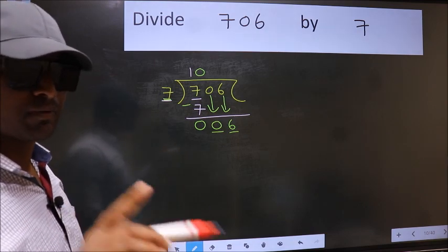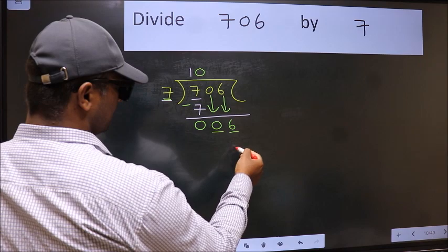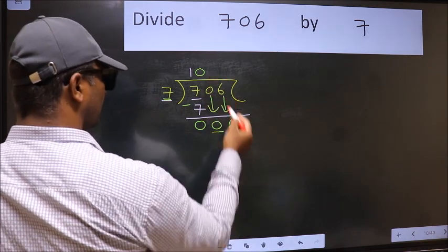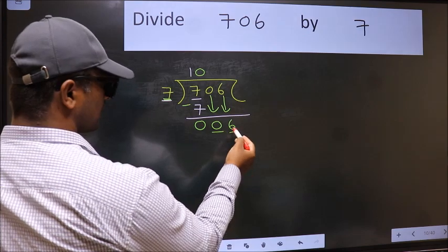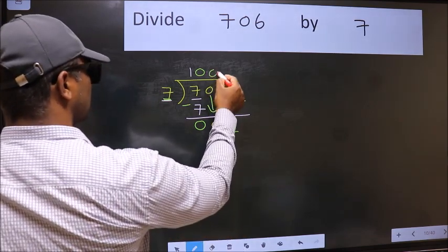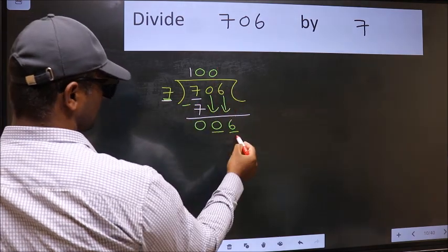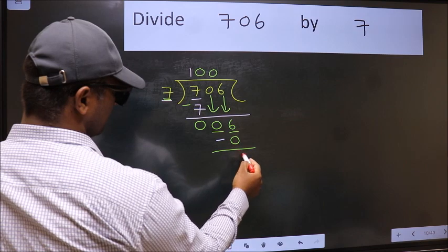Instead of that, what you should be thinking is which number should we take here. If I take 1, we will get 7. But 7 is larger than 6. So what we should do is we should take 0. So 7 into 0 is 0. Now we should subtract. We get 6.